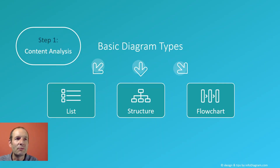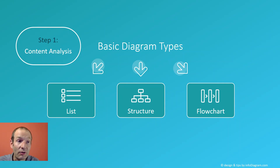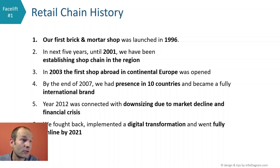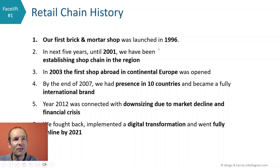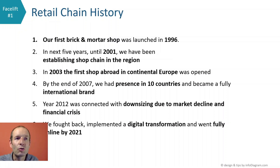We have several basic diagram types you can try to apply here. For example, we have a list diagram if you have a list of items, or a structure or flowchart if you have some process. Looking at our source text, you can see that there are points — but this is a sequence of events. It's not just a list; these events are organized in time. We have years expressing certain events, and that's why it could be good to consider a flowchart to express this kind of timeline.